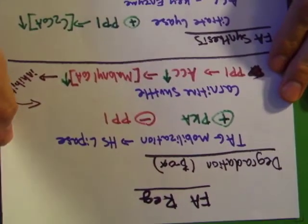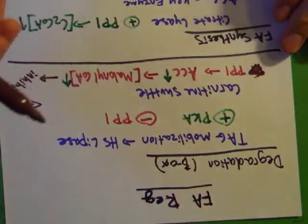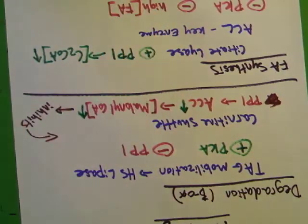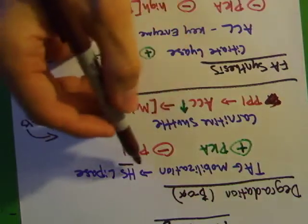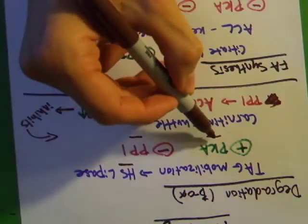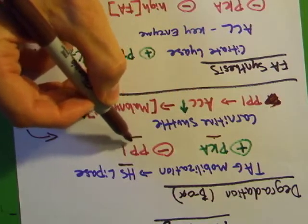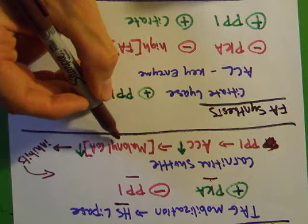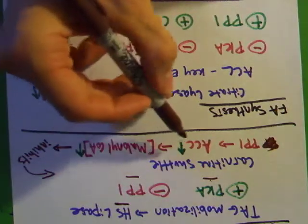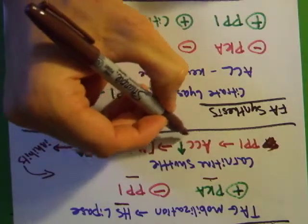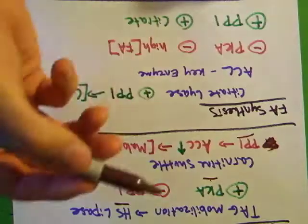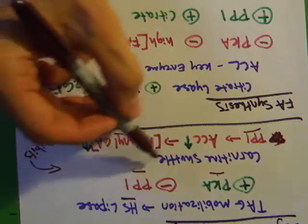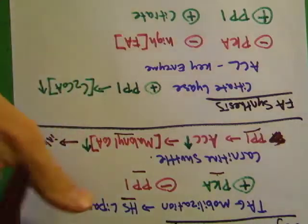Fatty acid regulation occurs in both degradation and synthesis phases. For mobilization: hormone-sensitive lipase is sensitive to fasting and exercise (which activate it) and eating (which slows it down). The carnitine shuttle is inhibited by high concentrations of malonyl-CoA. You get malonyl-CoA because the ACC reaction is running, which happens when PP1 is active because you've eaten and have insulin. Know those specific metabolites that block the carnitine shuttle.